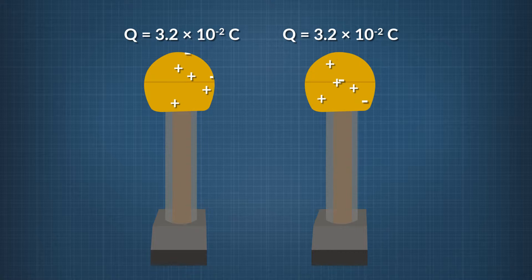So when the spheres touch, the positive charge of 6.4 times 10 to the negative 2 coulombs will be spread evenly across them. Electrons will flow out from the neutral sphere until both spheres have an equal positive charge. The charge of each sphere is half the original charge of the system, or positive 3.2 times 10 to the negative 2 coulombs.